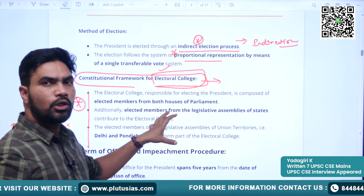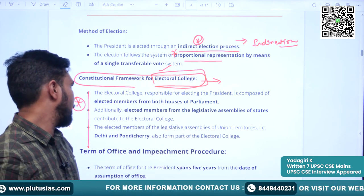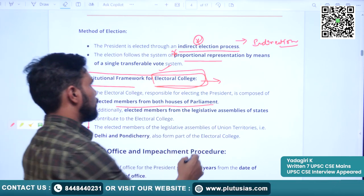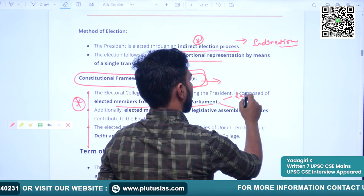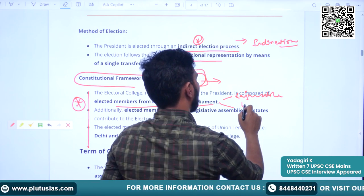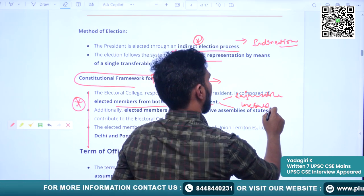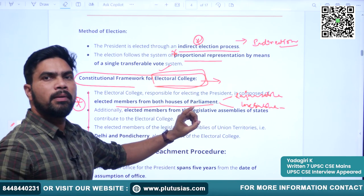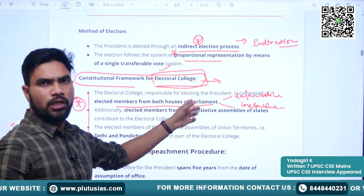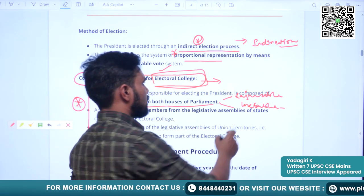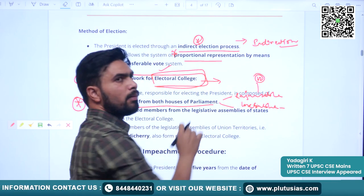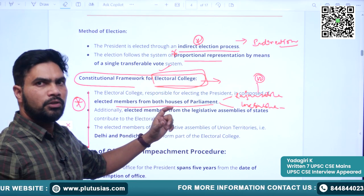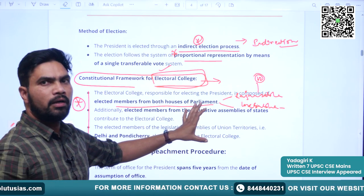The people eligible to elect the President form the Electoral College. The first category is elected members of both Houses of Parliament — Rajya Sabha and Lok Sabha. Remember, nominated members are not eligible to be part of the Electoral College. Only elected representatives. In Rajya Sabha, 12 members are nominated and they are not eligible.